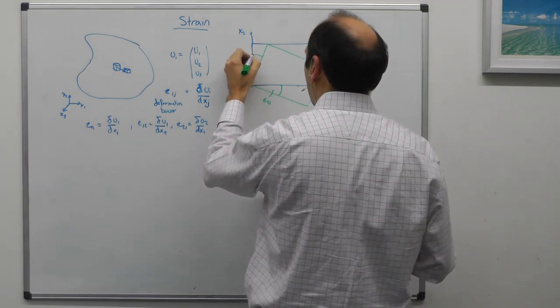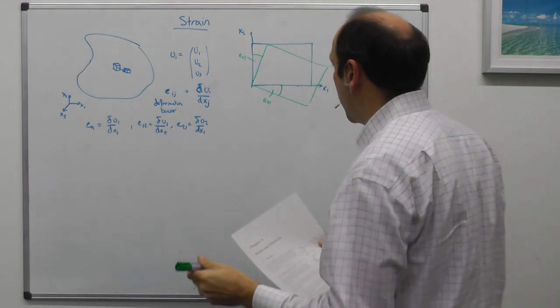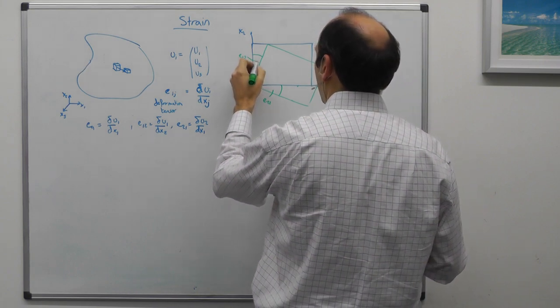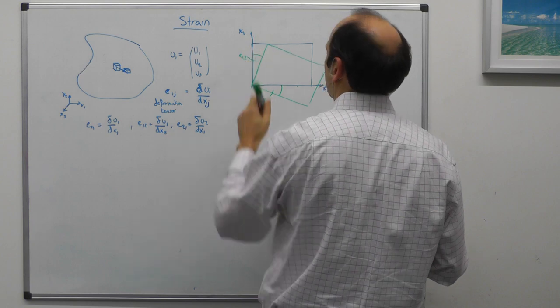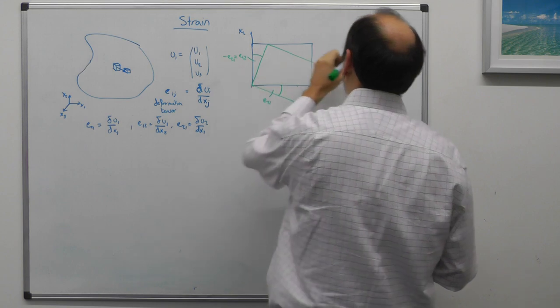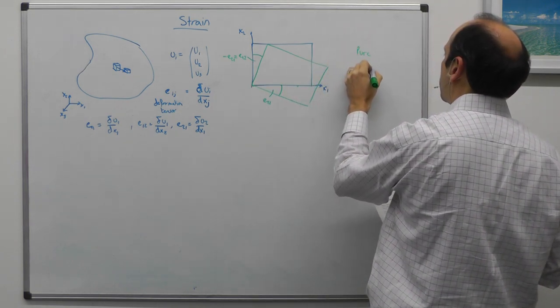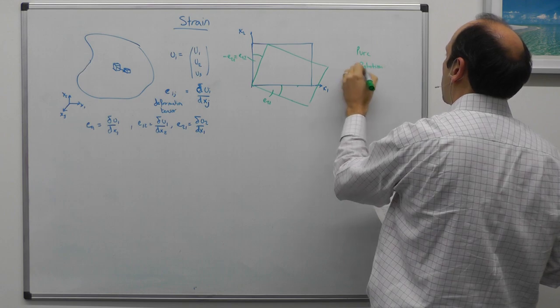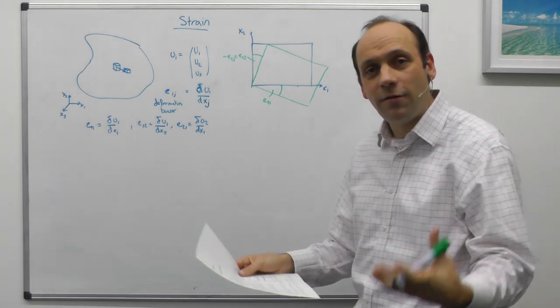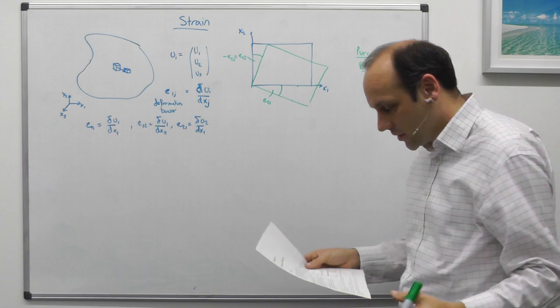And this one here is e12, and here those are, so that's the movement in the one direction of the two basis vector. And that's equal to minus e21, in this case of pure rotation. So you can see that we can have deformations that don't involve any shape change of the body, and that's pure rotation, for example.